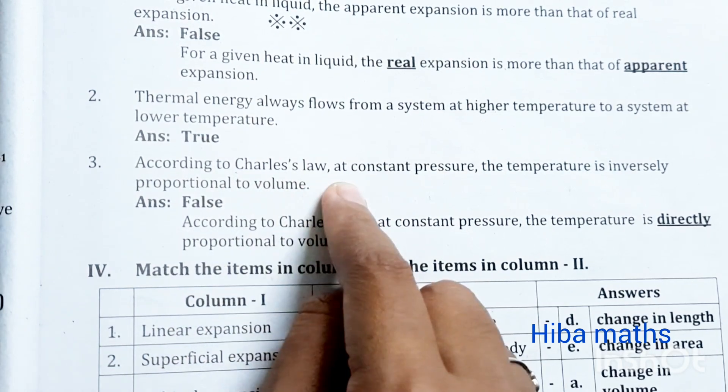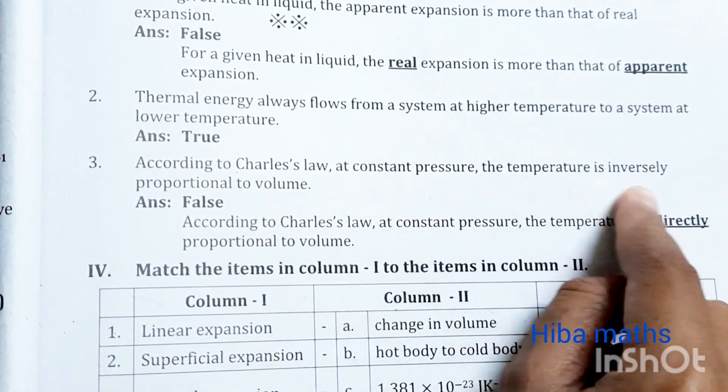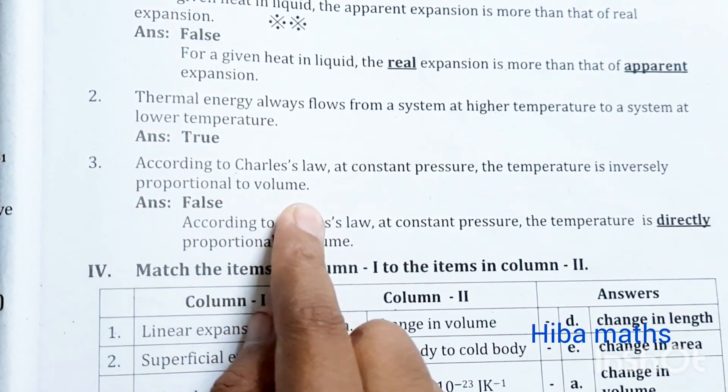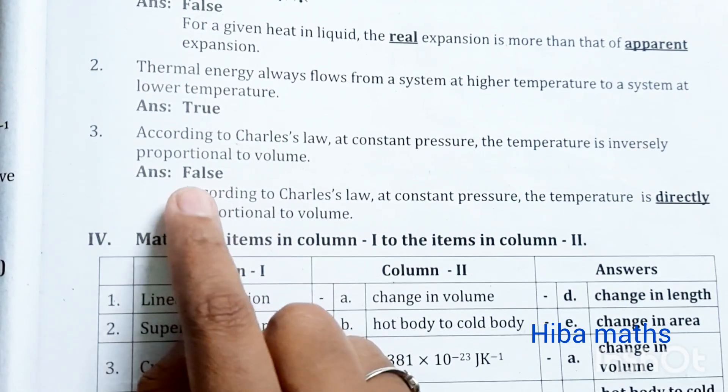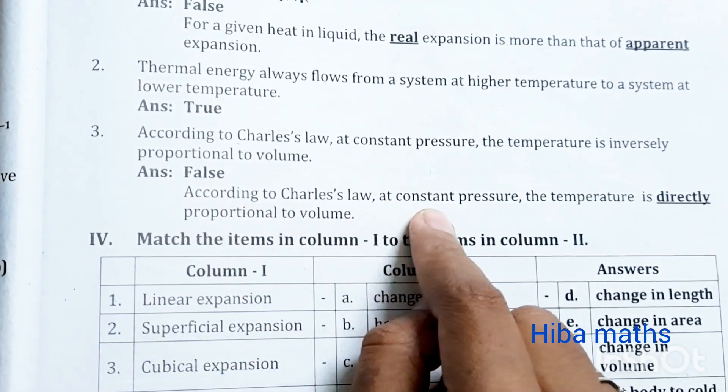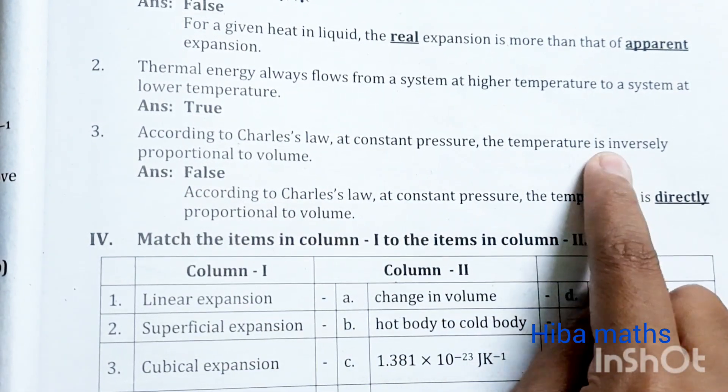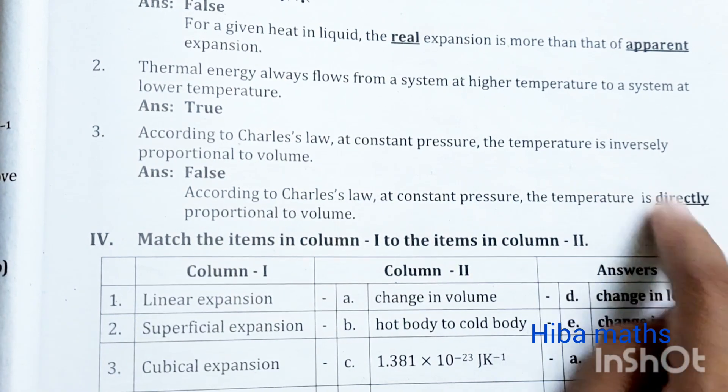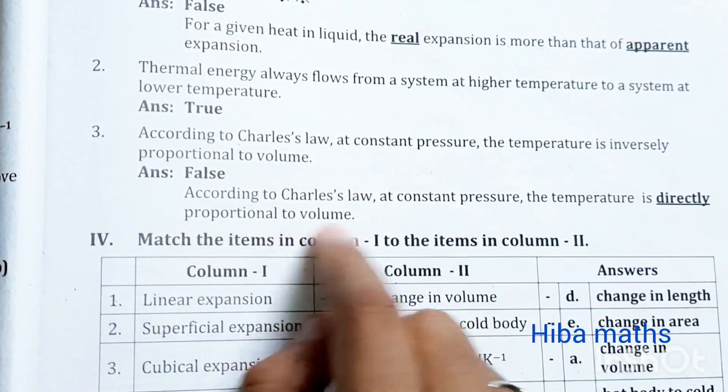According to Charles's law, at constant pressure, the temperature is inversely proportional to volume. Actually, it is false. According to Charles's law, at constant pressure, the temperature is directly proportional to volume. It is the reason.